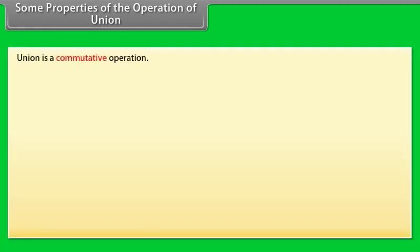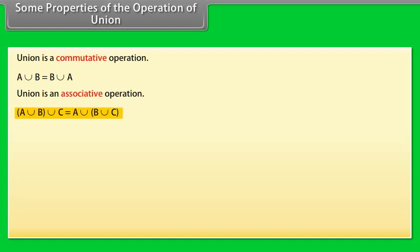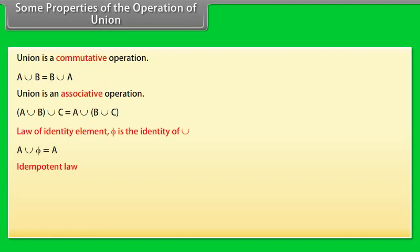Some properties of the operation of union. Union is a commutative operation: A union B equals B union A. Union is an associative operation: A union B union C equals A union B union C. Law of identity element: phi is the identity of union. A union phi equals A. The idempotent law: A union A equals A. Law of U: U union A equals U.